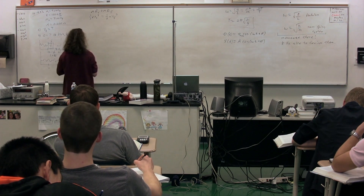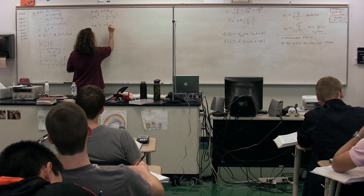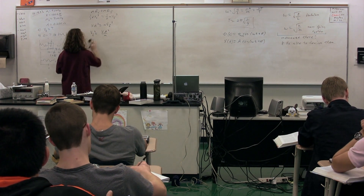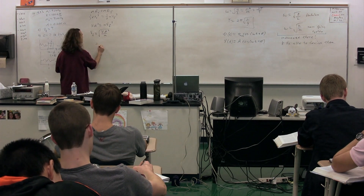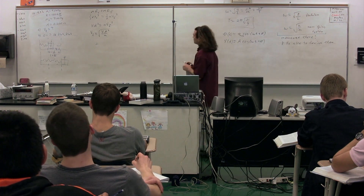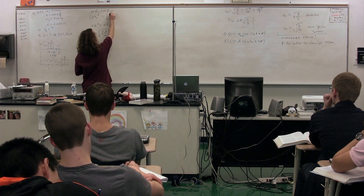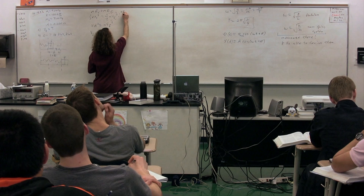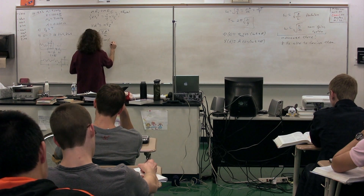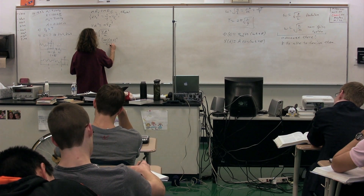So we have one half k x_initial squared equals one half m v_final squared. This gives us k A squared equals m v_final squared, so v_final squared equals k A squared divided by m, and the velocity equals the square root of k A squared divided by m. What mass are we talking about? The mass of both of them — because this is the total kinetic energy, so it's going to be the total mass.